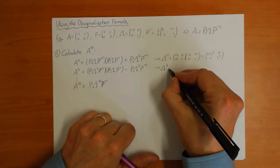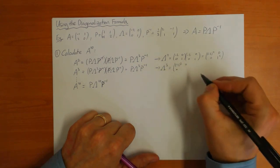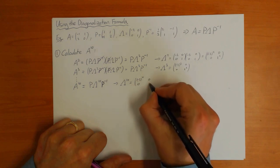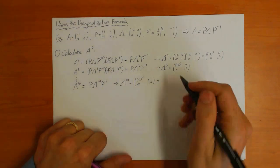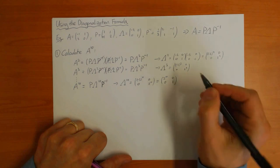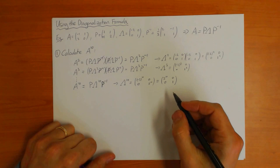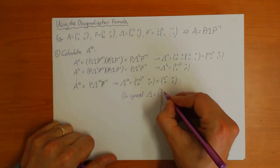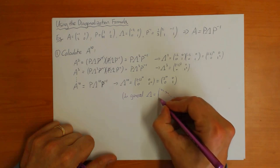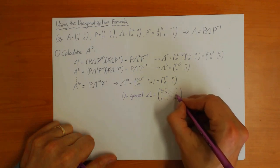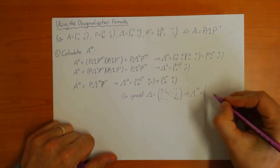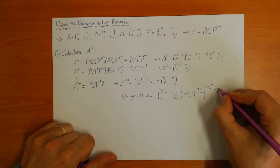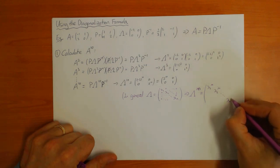So Lambda cubed is going to be minus 2 cubed, 0, 0, 1 cubed. And Lambda to the power 10 is minus 2 to the power 10, 0, 0, 1 to the power 10 — and minus 2 to the power 10 is the same as 2 to the power 10. In general, if Lambda has eigenvalues lambda-1, lambda-2, up to lambda-n on the diagonal with zeros elsewhere, then Lambda to the power m has lambda-1 to the m, lambda-2 to the m, up to lambda-n to the m on the diagonal, with zeros everywhere else.